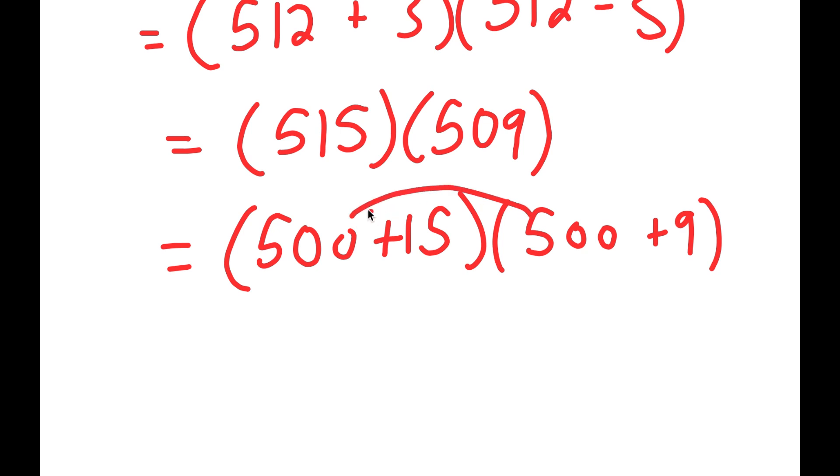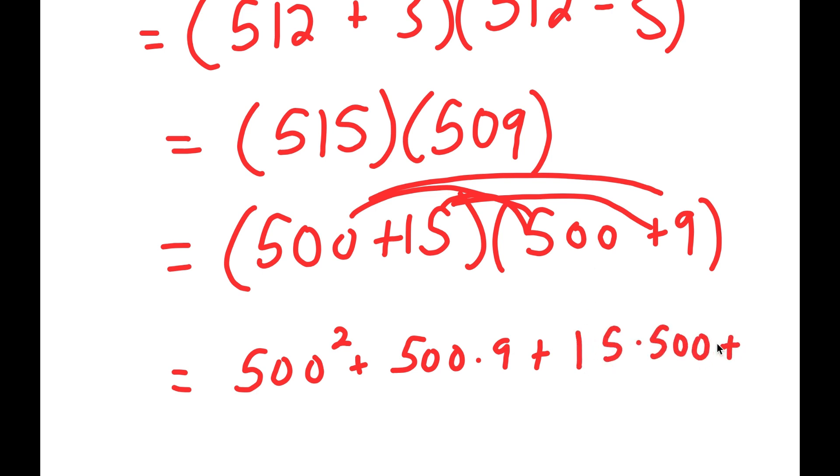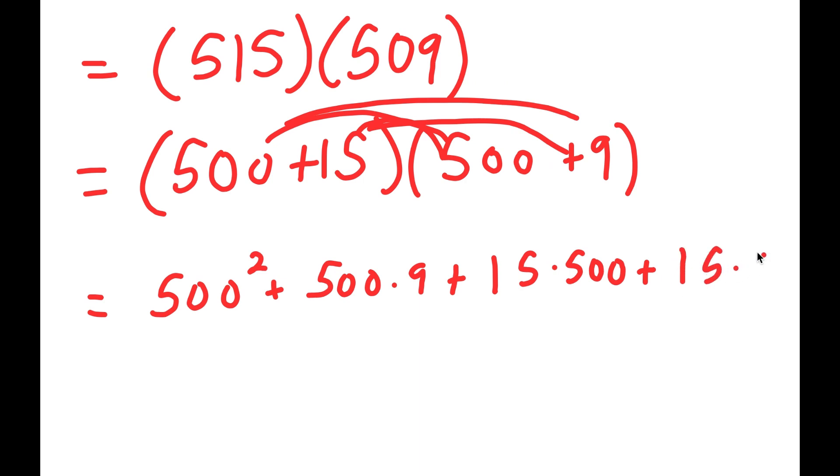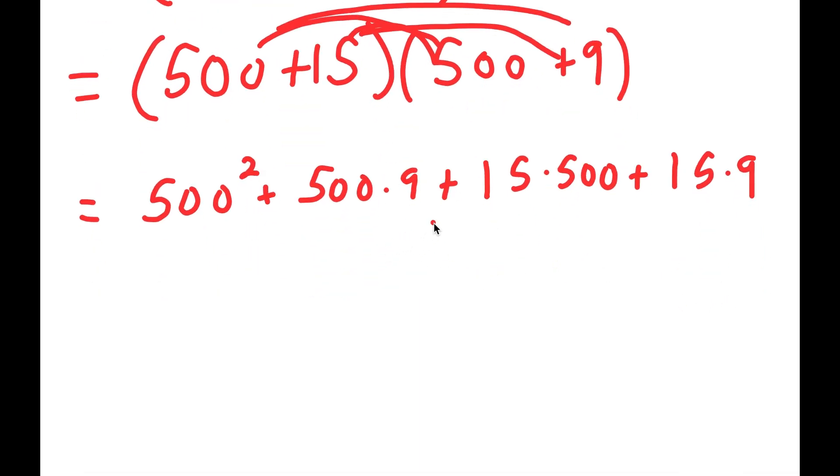So now I can distribute the 500, so I get 500 squared plus 500 times 9 plus, now I can distribute the 15, 15 times 500 plus 15 times 9. Now, 500 squared, that's going to equal 250,000. And I have this plus 500 times 9, which is equal to 4,500 plus 15 times 500, which is 7,500 plus 15 times 9, which is 135.